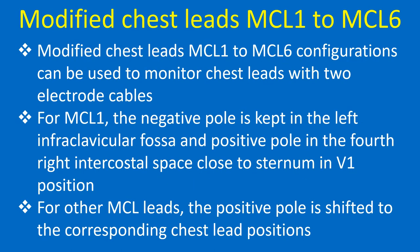Modified chest leads, MCL1 to MCL6 configurations, can be used to monitor chest leads with two electrode cables. For MCL1, the negative pole is kept in the left infraclavicular fossa and the positive pole in the fourth right intercostal space close to the sternum in V1 position. For other MCL leads, the positive pole is shifted to the corresponding chest lead positions.